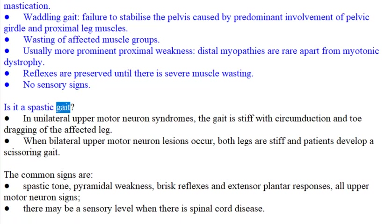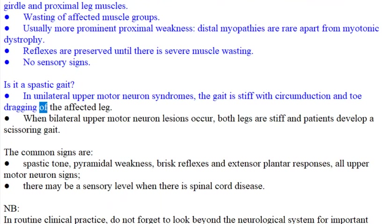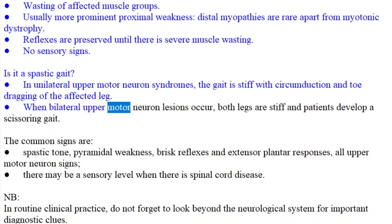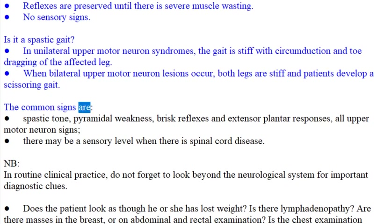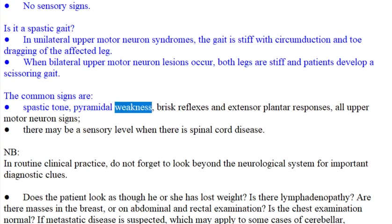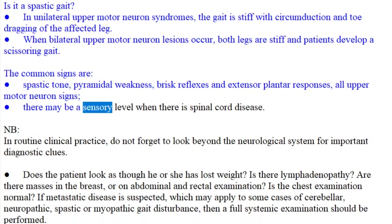Is it a spastic gait? In unilateral upper motor neuron syndromes, the gait is stiff with circumduction and toe dragging of the affected leg. When bilateral upper motor neuron lesions occur, both legs are stiff and patients develop a scissoring gait. The common signs are spastic tone, pyramidal weakness, brisk reflexes, and extensor plantar responses — all upper motor neuron signs. There may be a sensory level when there is spinal cord disease.